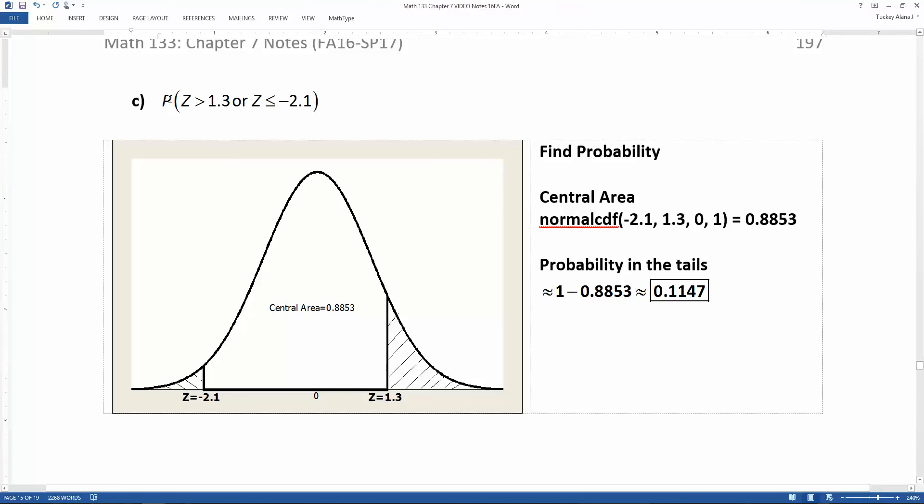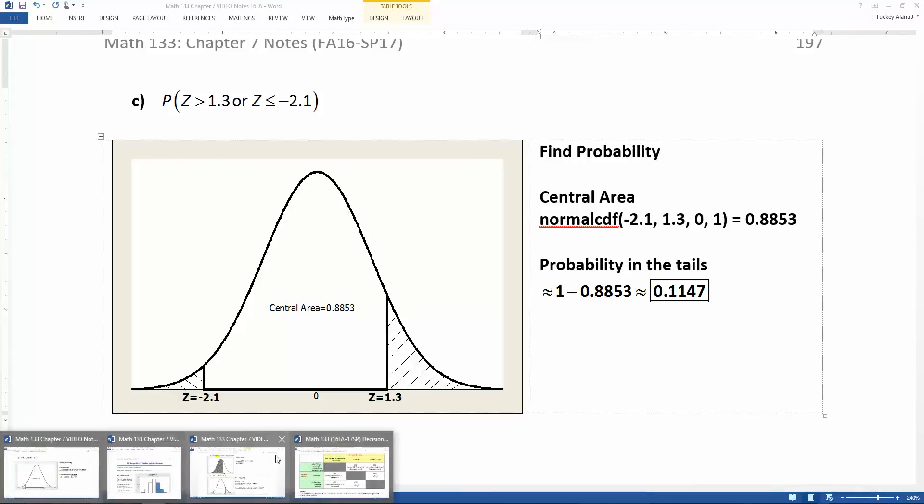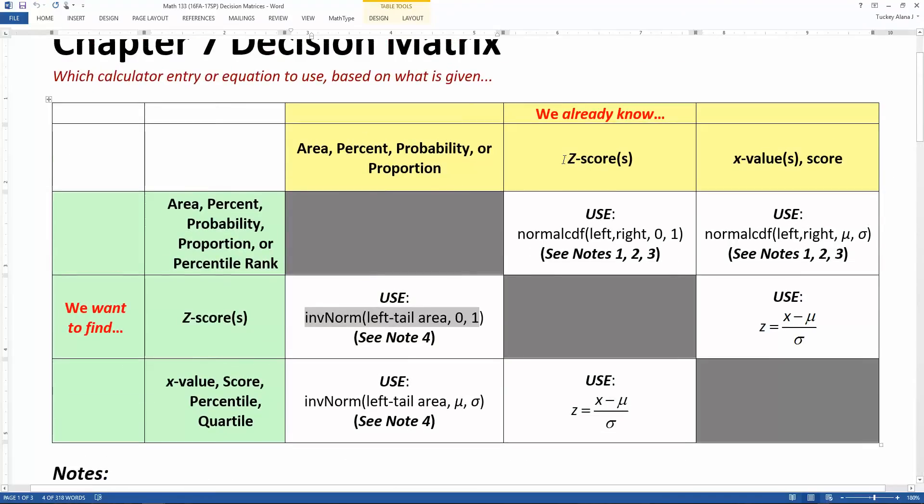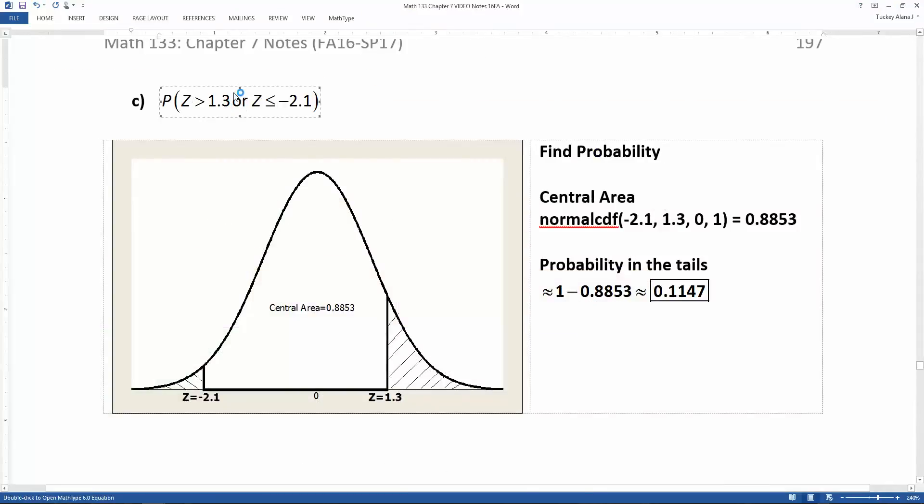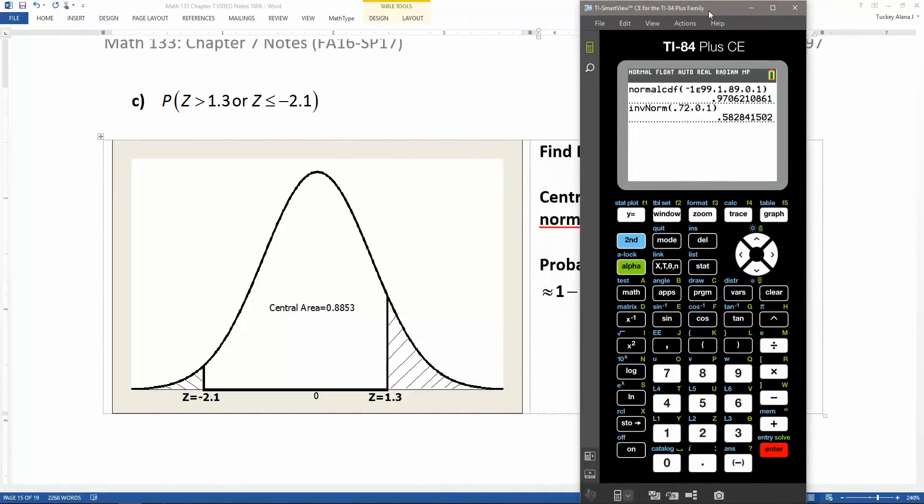You are being asked to find probability. That's what capital P with a parenthesis stands for. You are being asked to find probability, and you're given Z scores. That means you're going to be using normal CDF, left, right, comma, zero, comma, one. So I'm going to go to normal distribution in the distribution menu. Number two, normal CDF. Now the left-hand edge of that white center in the middle is negative 2.1. That's the lower bound. The upper bound of that white center is 1.3, and then 0 and 1. Paste, enter, and there it is, 0.8853.